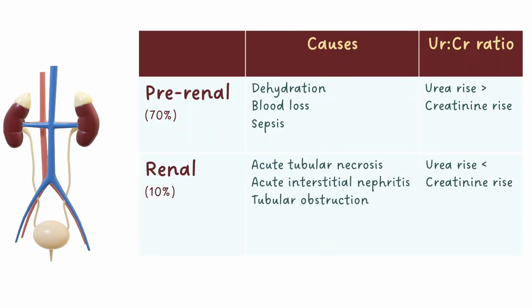Renal causes are those that damage the kidney itself. Acute tubular necrosis is irreversible damage to the nephrons caused by a prolonged prerenal AKI. Acute interstitial nephritis, which is inflammation in the kidney, is commonly caused by medications such as ACE inhibitors, NSAIDs and antibiotics. Tubular obstruction occurs when small proteins block the nephron tubules — for example myoglobin from rhabdomyolysis or paraproteins in myeloma. These will generally cause a urea rise that is not proportionally as large as the creatinine rise.